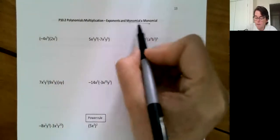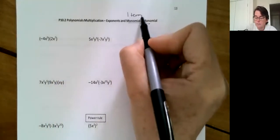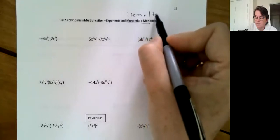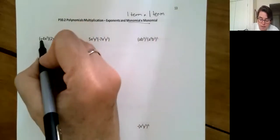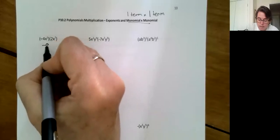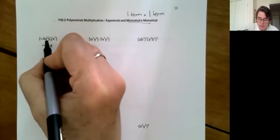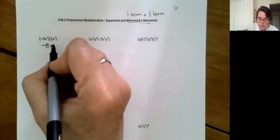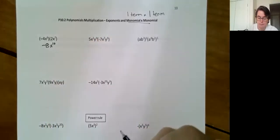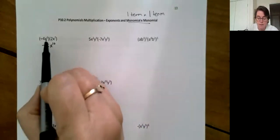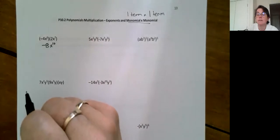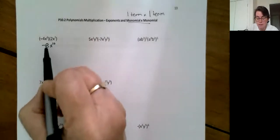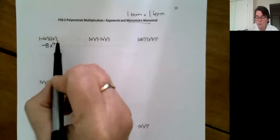Remember when you're doing a monomial, that's one term times one term. Multiply the coefficients—the big numbers out in front—and you add your exponents. So negative four times two is negative eight, and then x to the third times x to the seventh is x to the tenth. You never do the same thing to your exponents as you do to the coefficients. The coefficients multiply, it's the exponents that are a little bit different.